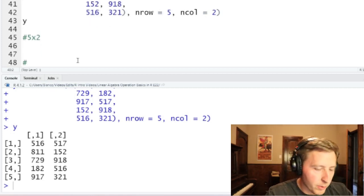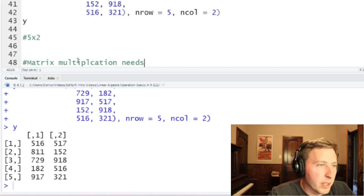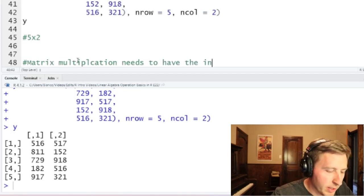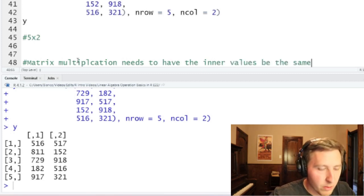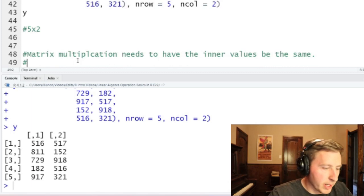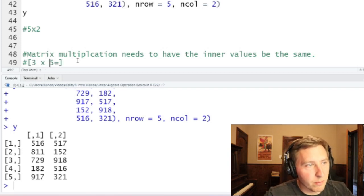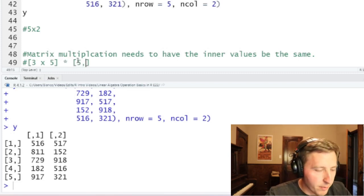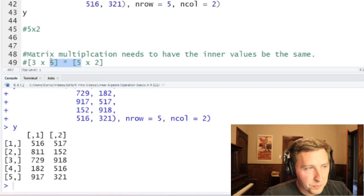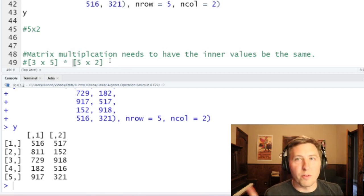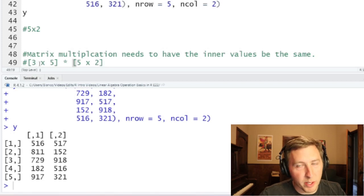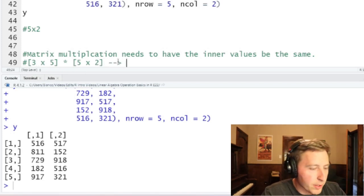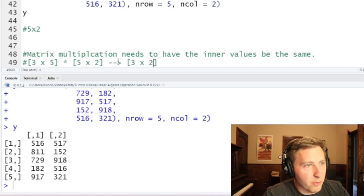And if we remember school, for matrix multiplication it needs to have the inner values be the same. So what I mean by this is we're going to have a three by five, and this is going to be multiplied by a five by two. So the inner pieces here need to both be the same number. It's going to be five here. Again if you flopped the other way around, the inner pieces would be two and three, so you can't multiply them that way. And this is going to give us the outer values for dimensions. So it should give us a three by two matrix here.